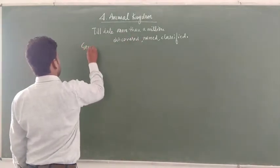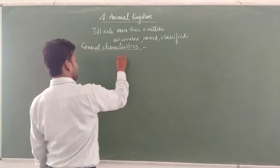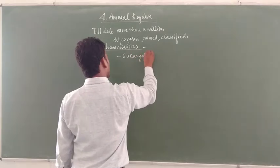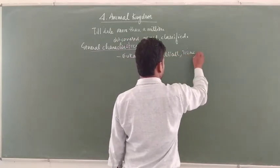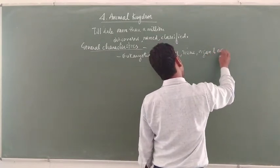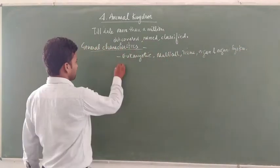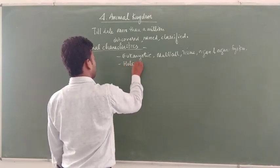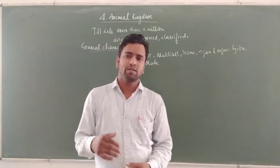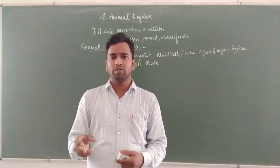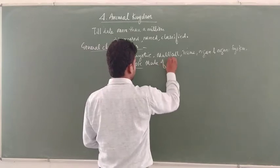General characteristics of animals: they are eukaryotic and multicellular, showing tissue, organ, and organ system level of organization. Animals show holozoic mode of nutrition - they are not able to synthesize their own food and depend on other organisms for nutrition.